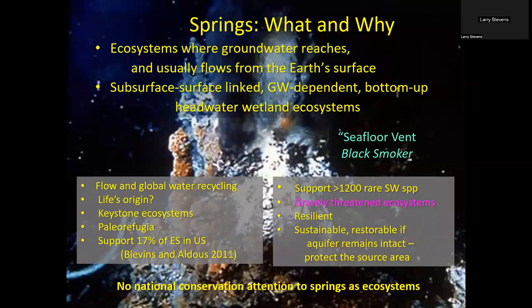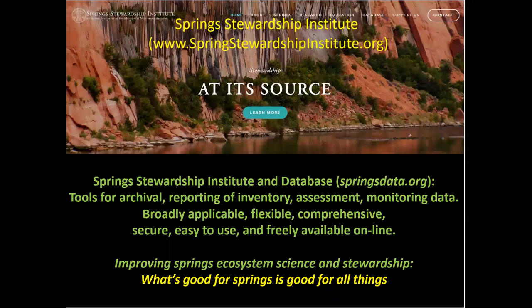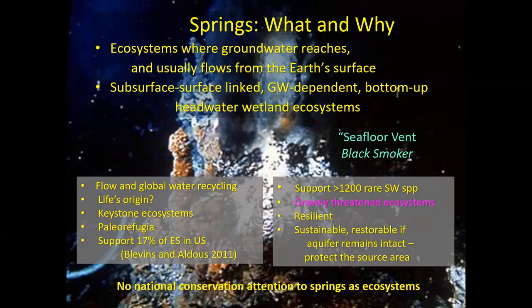First, to get clear about what we're talking about: springs are ecosystems where groundwater reaches and usually flows from the Earth's surface. In management jargon, these are subsurface-to-surface-linked, groundwater-dependent, bottom-up, headwater, wetland ecosystems — recognizing that pretty much every word within that sentence means something to different kinds of ecosystem managers. Springs are important because they are places where water is recycled on Earth. All the water on Earth is recycled through springs on the seafloor about every 8 to 10 million years. They are quite likely the place where life could have originated on Earth, and they're ecologically highly interactive, or keystone, ecosystems. Springs make up a tiny proportion of the landscape but support more than 17% of the US's endangered species.